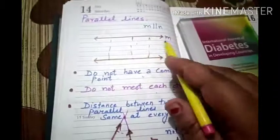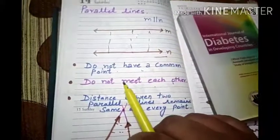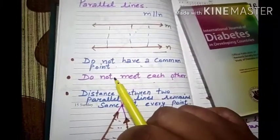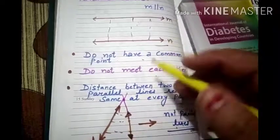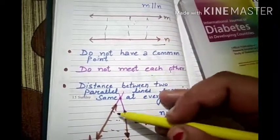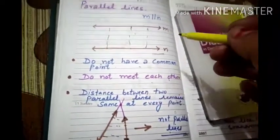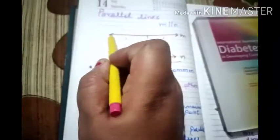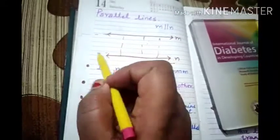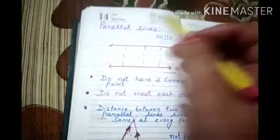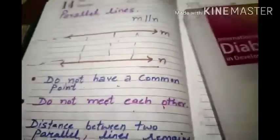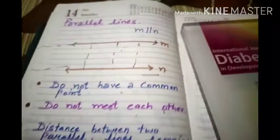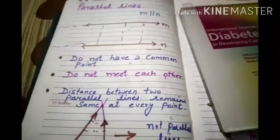Because the first feature of parallel lines is that they do not meet each other. So for the first pair of lines M and N, if you extend them, they do not meet each other.